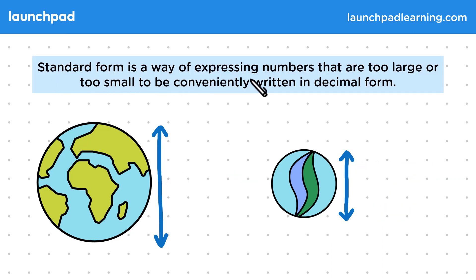Standard form is a way of expressing numbers that are too large or too small to be conveniently written in decimal form. So then the value of the Earth's diameter would be 1.3 times 10 to the power of 4 kilometers, and the marble's diameter would be 1.3 times 10 to the power of minus 5 kilometers.